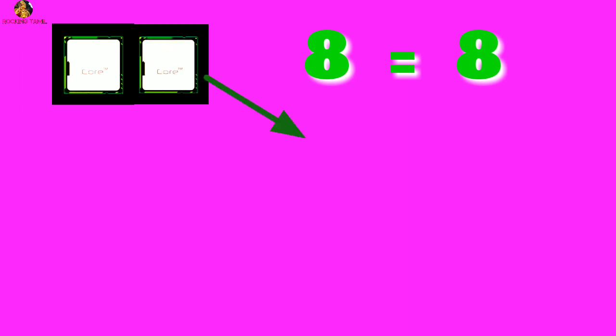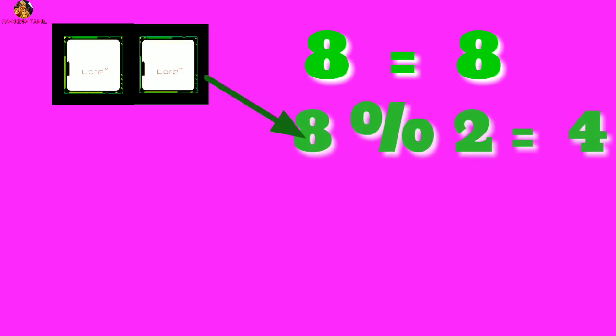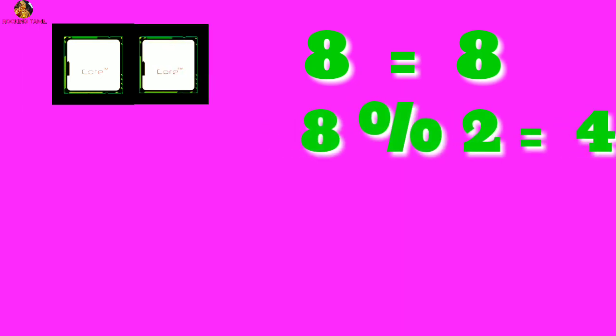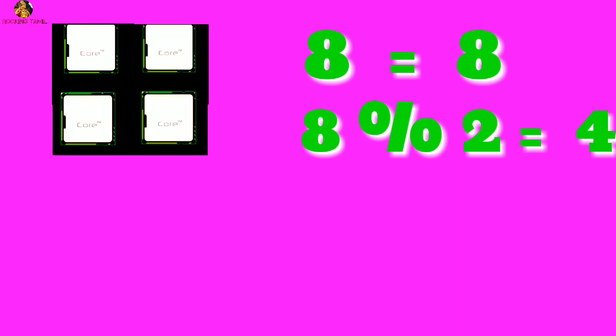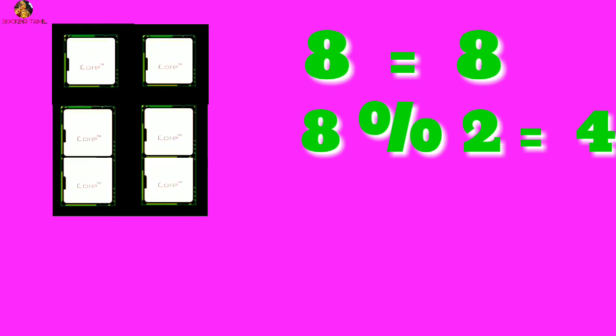In the processor, it works in cores. For example, for a single core processor, the processor takes 8 hours. But in a dual core processor, it works on 2 cores at the same time and finishes in 4 hours.